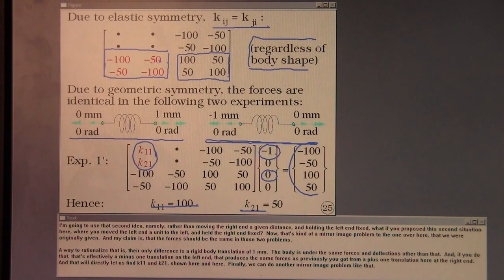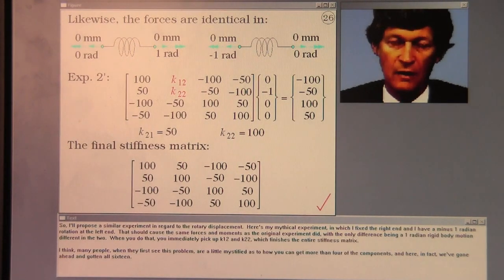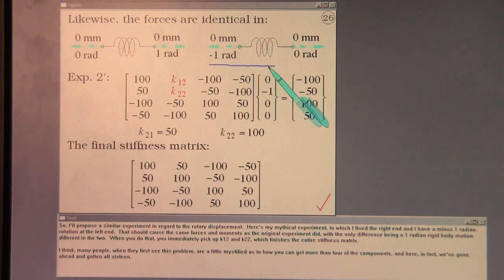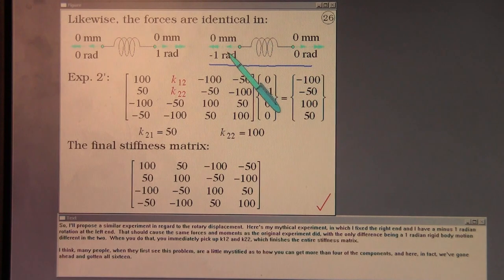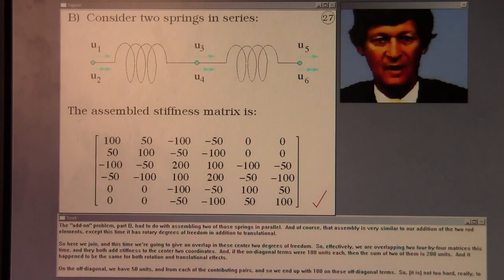And finally, we can do another mirror image problem like that. So I'll propose a similar experiment in regard to the rotary displacement. Here's my mythical experiment in which I fixed the right end and I have a minus one radian rotation at the left end. That should cause the same forces and moments as the original experiment did with the only difference being a one radian rigid body motion different in the two. When you do that, you immediately pick up K12 and K22, which finishes the entire stiffness matrix. I think many people when they first see this problem are a little mystified as to how you can get more than four of the components. And here, in fact, we've gone ahead and gotten all 16.